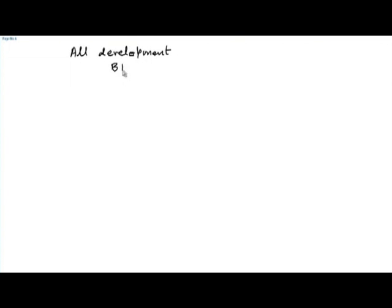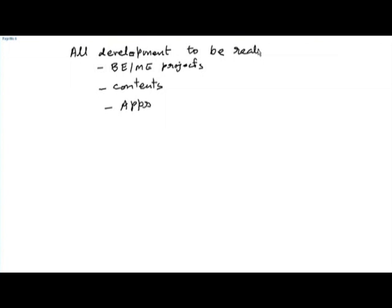All work done using these Aakash tablets and using government-provided funding — the results must go into open source. All development, whether BE or ME projects, contents, or applications, must be released. The idea is that we do this as collaborative innovation for public good.